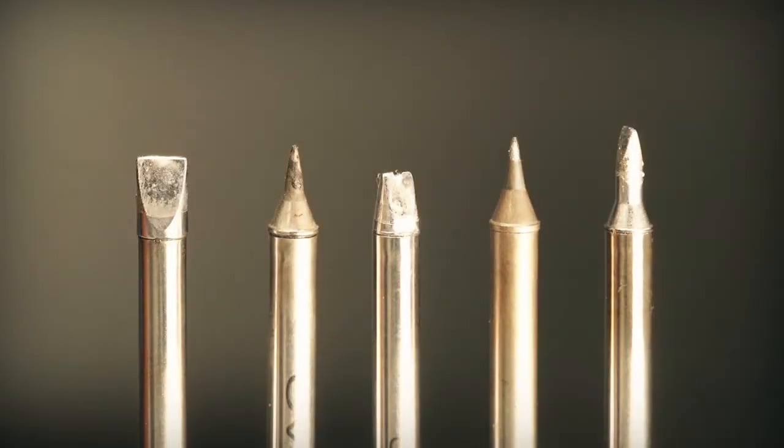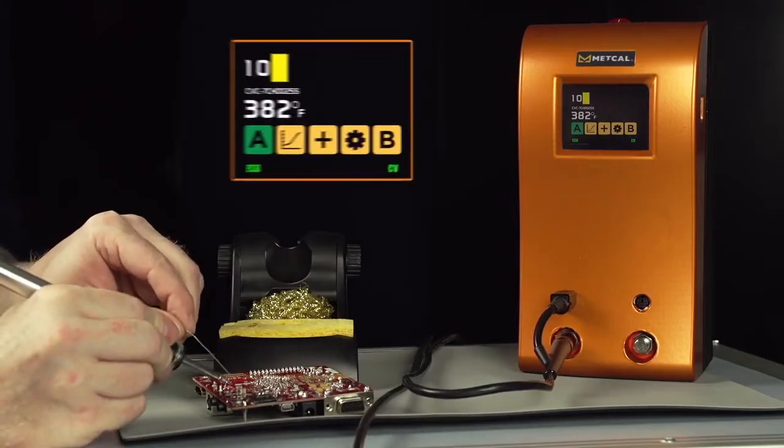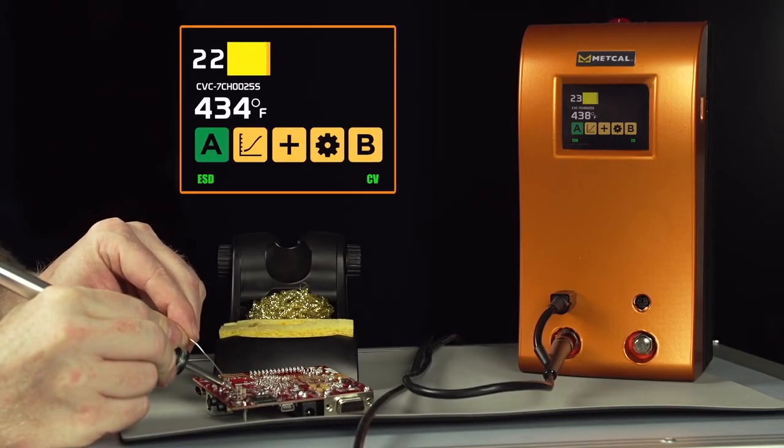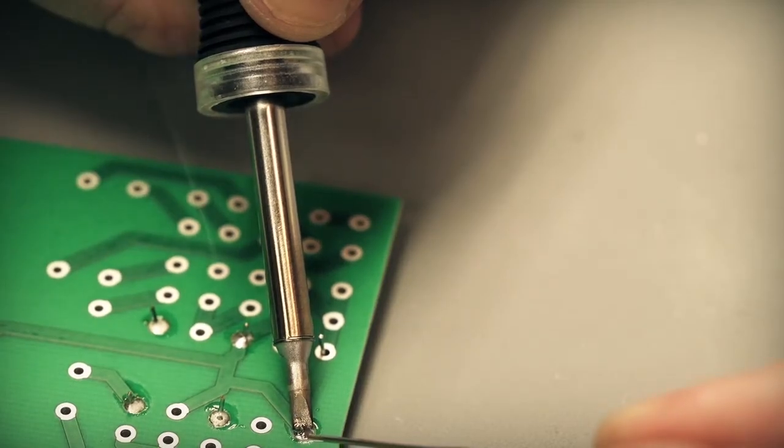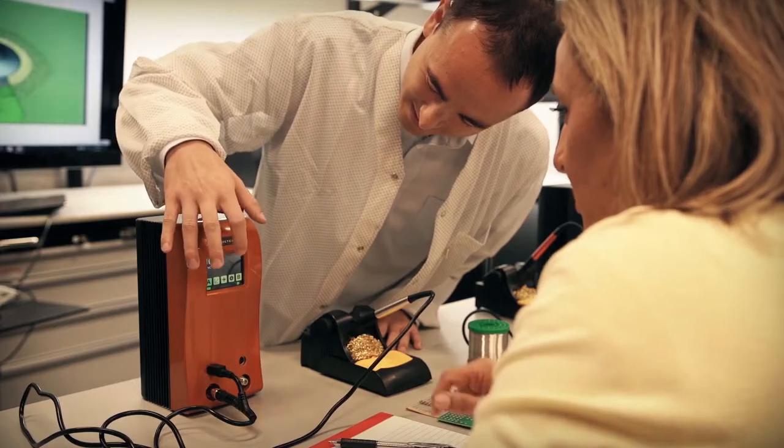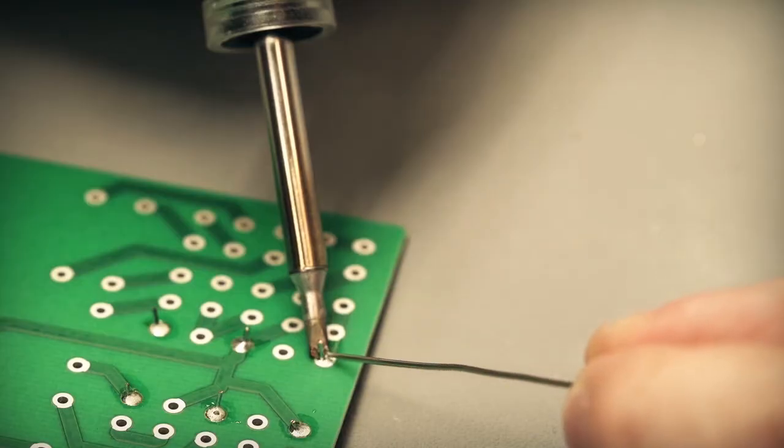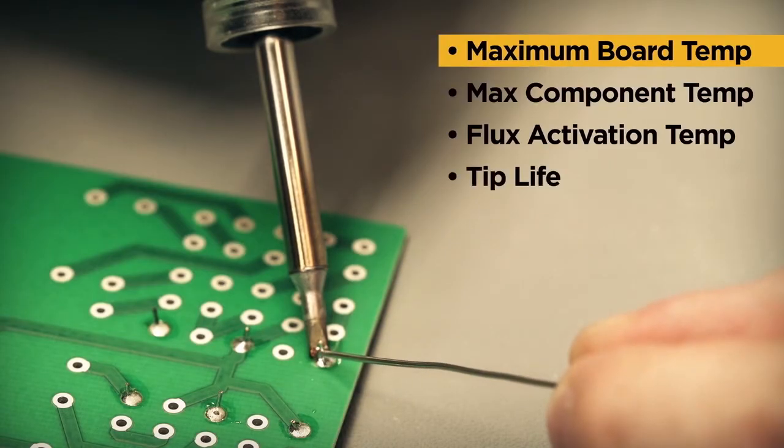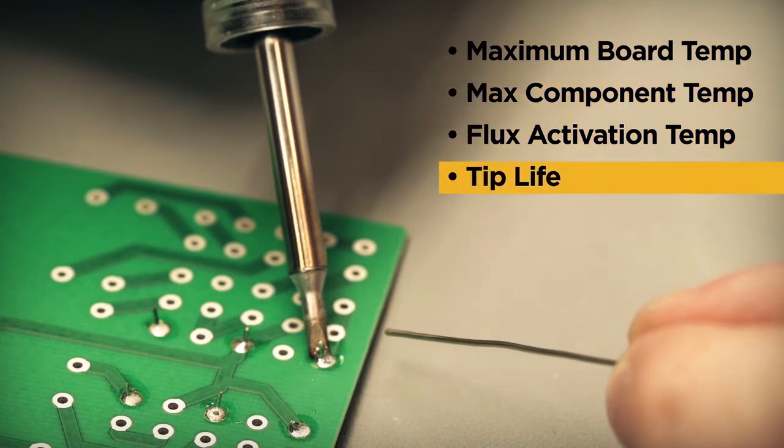Metcal's heating technology incorporates multiple alloys to achieve temperatures within the 500, 600, 700, 800 and 900 degree ranges. The specific metallurgical properties define the maximum temperature achievable by the heater. This enables a user to select the correct temperature range for the job by balancing performance versus risk factors like maximum board or component temperature, flux activation temperature, tip life, etc.